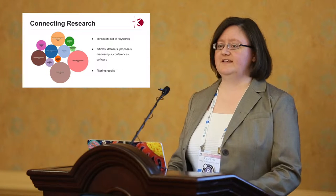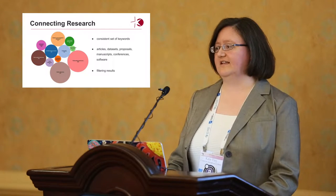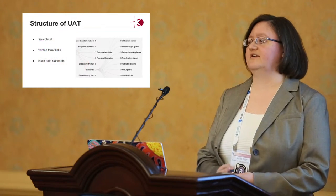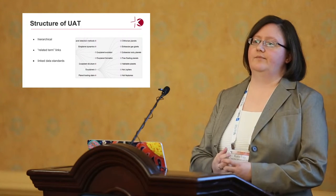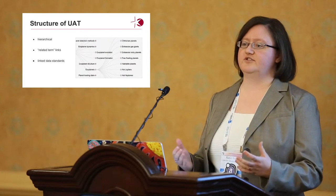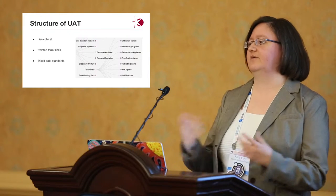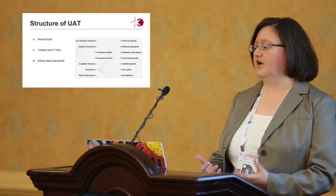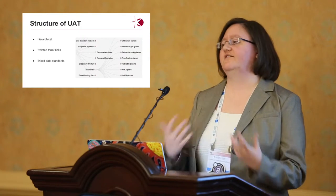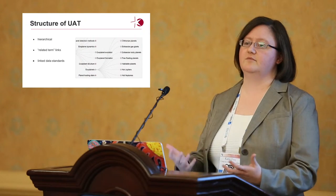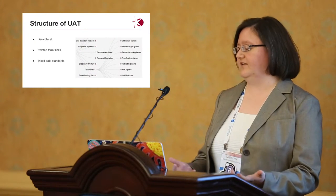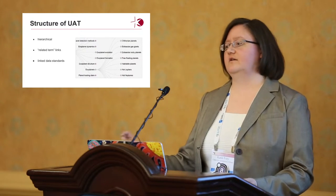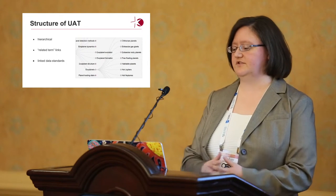The reason the UAT specifically can do this is that it's not a flat list of keywords — it has a structured hierarchy that defines relationships between terms. You can programmatically look through abstracts and pull out keywords, but there's no way to tell a computer that general relativity is related to gravitation, or that hot Jupiter is a type of exoplanet. You need a system to tell a computer that so it can form those links and bring up relevant results.